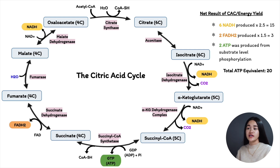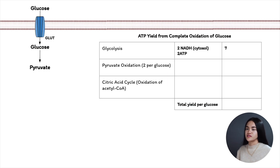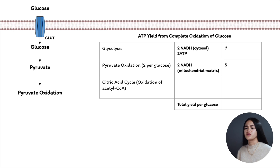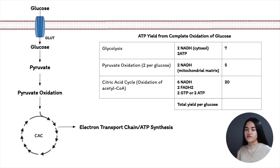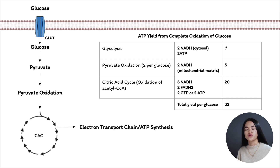Taking all pathways starting from glycolysis: glycolysis produces a net 2 ATP and 2 NADH (5 ATP equivalent), for a glycolysis total of 7 ATP. Pyruvate oxidation to acetyl-CoA generates 2 NADH, totaling 5 ATP. The citric acid cycle contributes 20 ATP equivalents. The total number of ATP molecules produced per one glucose molecule oxidized under aerobic conditions is 32.